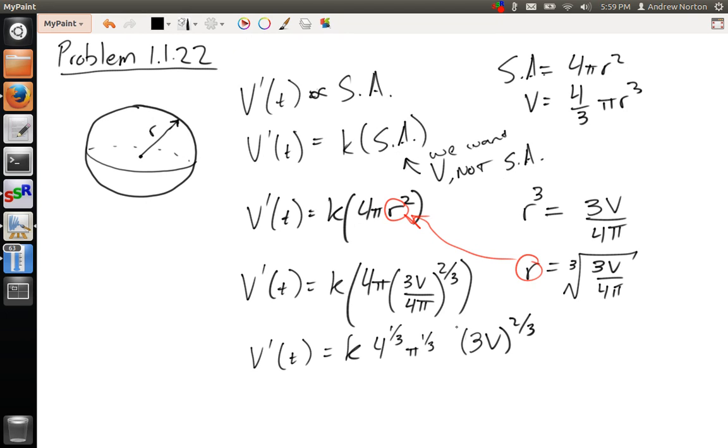Well, notice that really, 4^(1/3) π^(1/3) is just part of a constant, right? It's just a constant, and this k is an arbitrary constant. So we can actually consume this 4 and the π and put it into the k. I'm just going to call this a capital K to denote that it's bigger, times 3V to the 2/3 power.